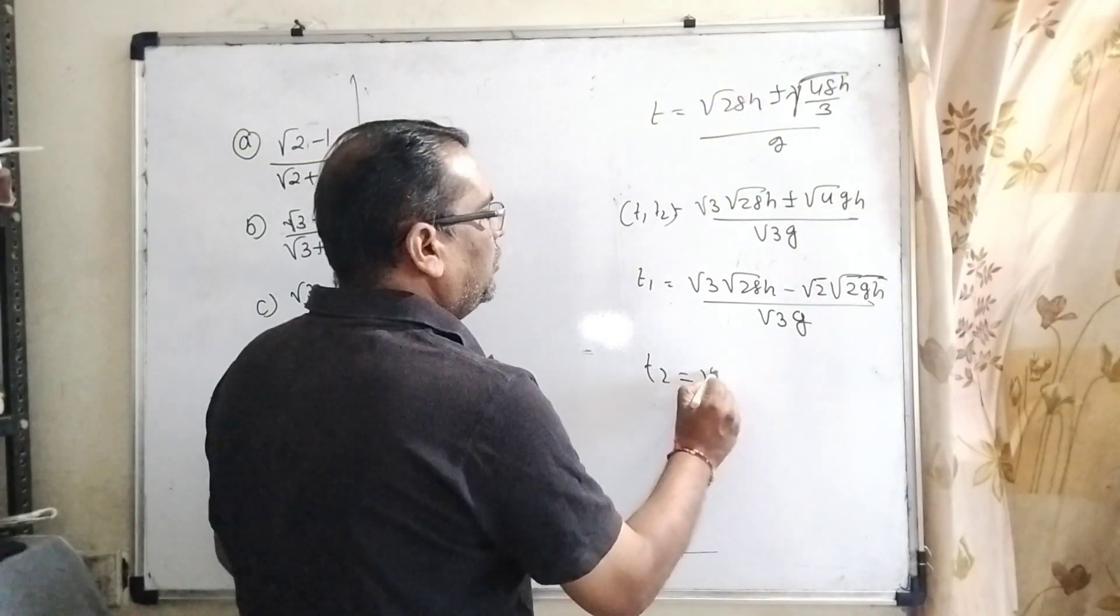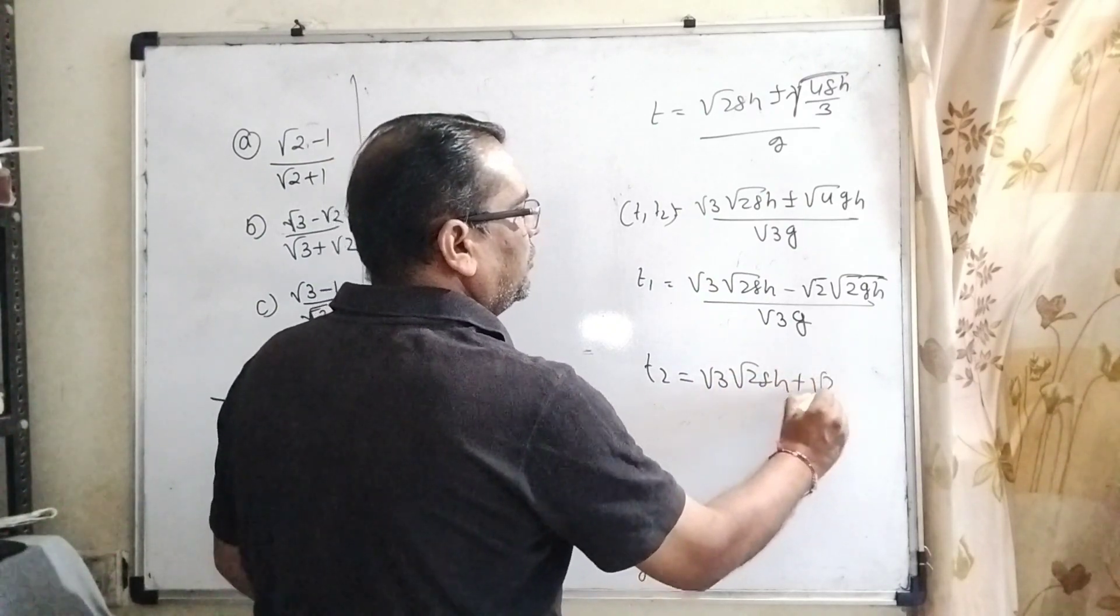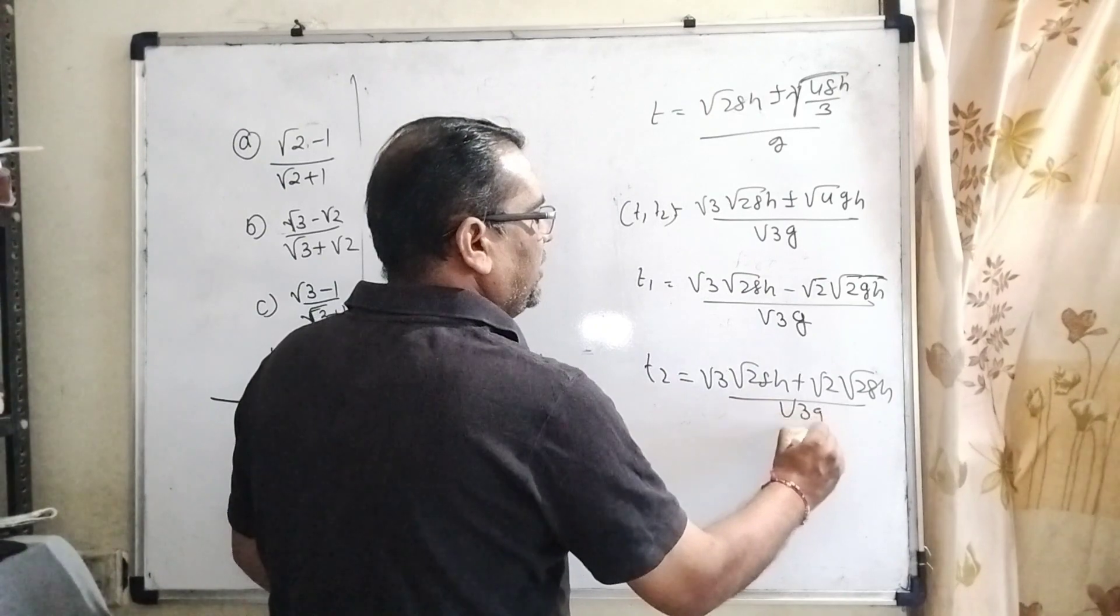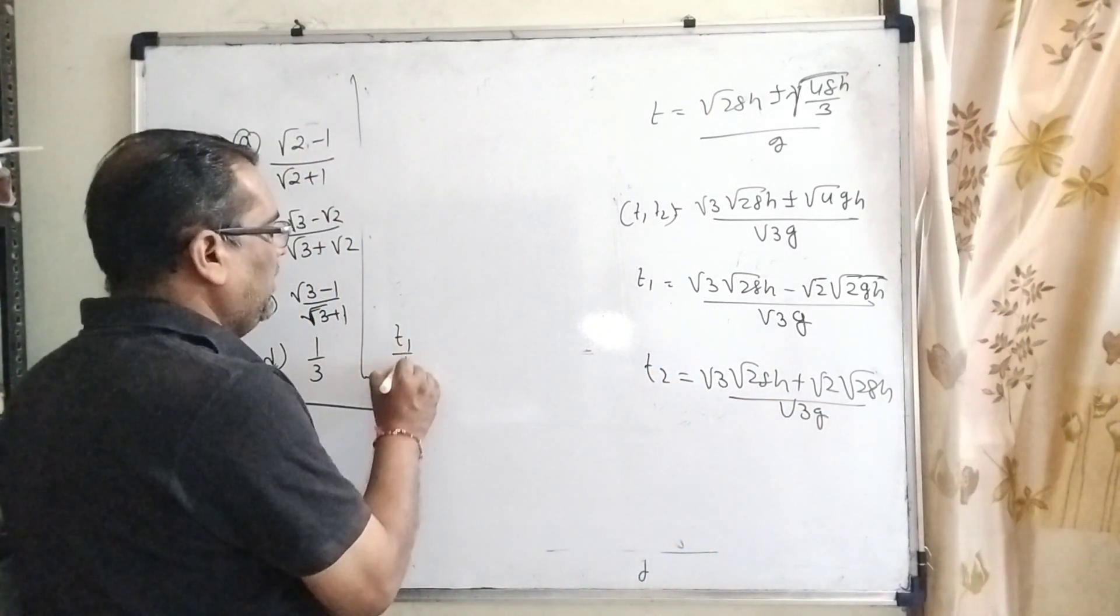Similarly, t2 = √(2gh)[√3 + √2] / (√3·g).